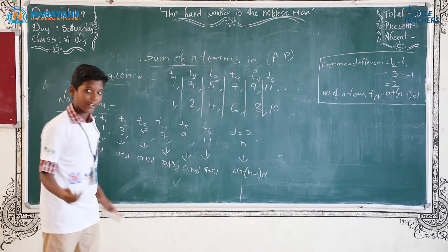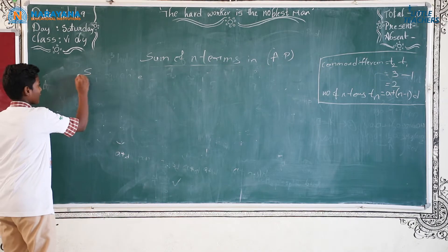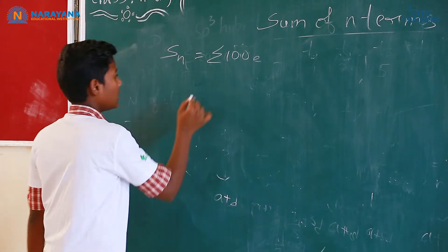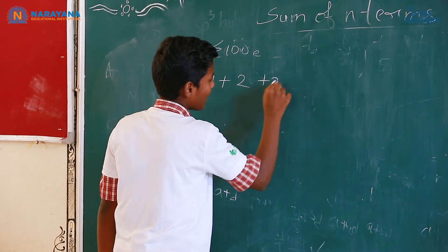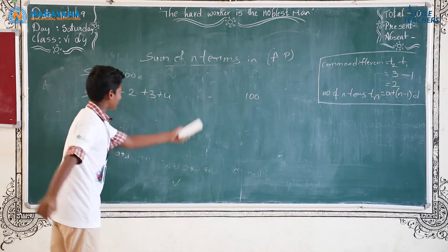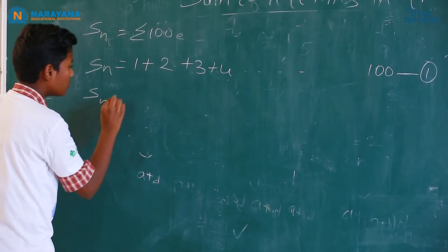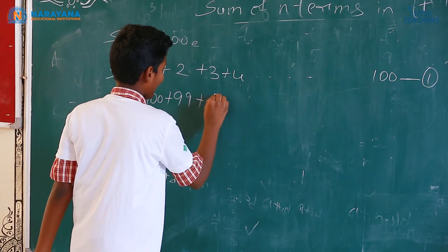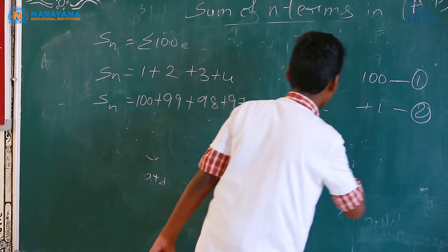Now we should find out the sum of N terms — this is our topic. I will take one example for clarification. Sn equals the sum of 100 terms in the sequence: 1 plus 2 plus 3 plus 4 and so on up to 100. Let this be the first equation. Now rewrite the same equation in reverse: Sn equals 100 plus 99 plus 98 plus 97 and so on, plus 1. Let this be the second equation.